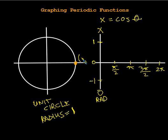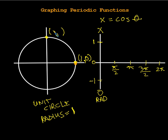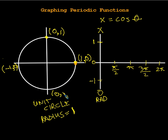So that means our coordinates here are going to be x equals 1, and y equals 0 at this very first point. Then as we go around up here, this x will be 0 and this y will be 1. And over here, the x should be negative 1 and the y will be 0. Finally, our x here will be 0 and our y will be negative 1.